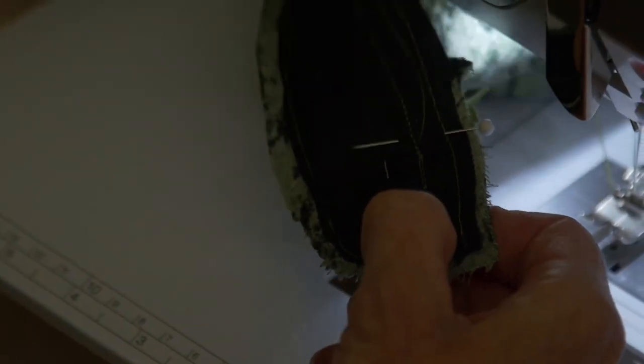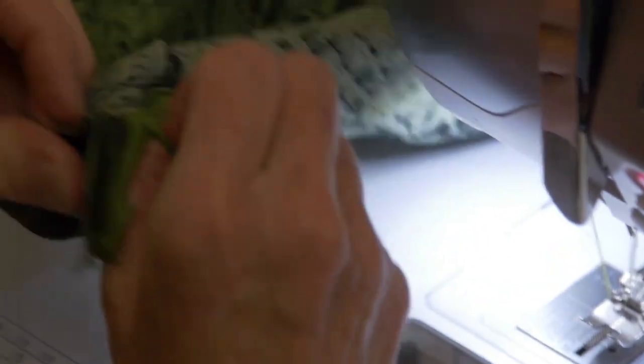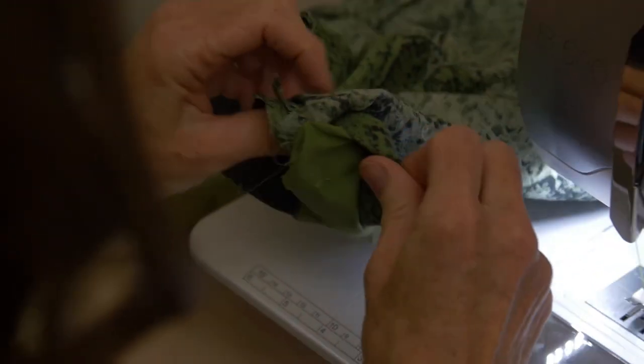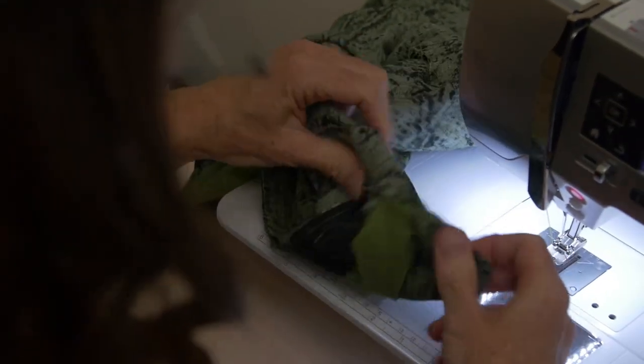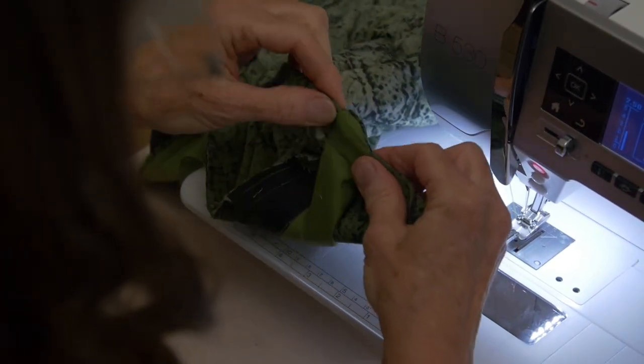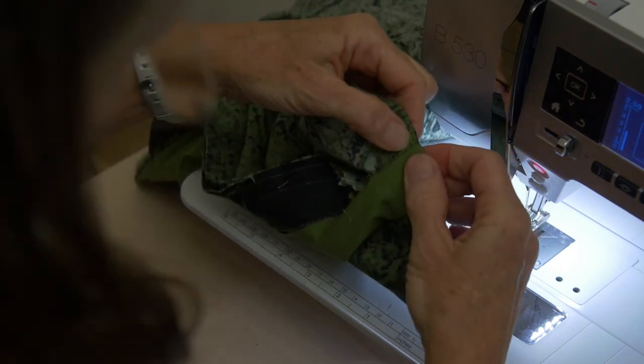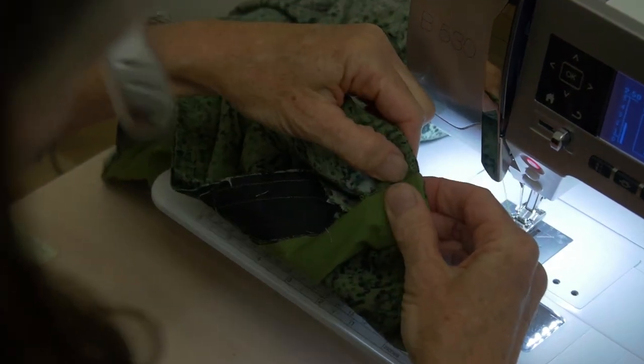And then when both tips are done, it's going to be very much like your placket and your cuff were. You'll be able to reach up inside of here, pull out your shirt, pull out your collar. And that tip, that edge, is completely enclosed.